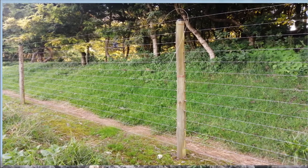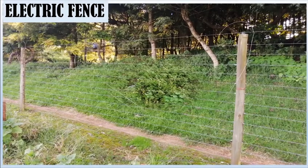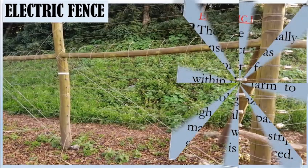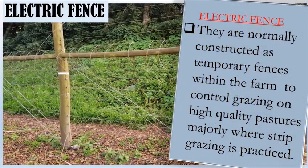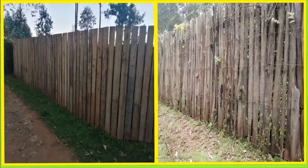Let us now look at the other types of dead fences. Can you identify the fence displayed on the photograph? This is an electric fence. Electric fences are normally constructed as temporary fences within the farm to control grazing on high quality pastures, mainly where strip grazing is practiced. In forestry settings, electric fences are used to keep off large animals like buffalos and elephants.